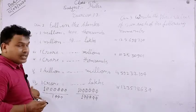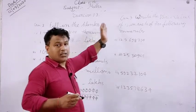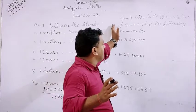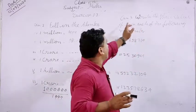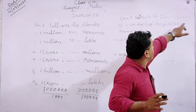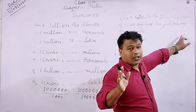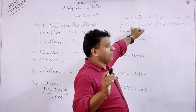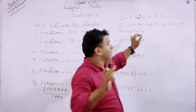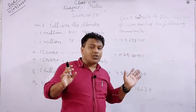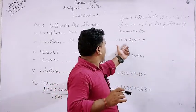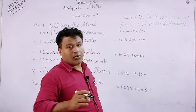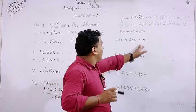Now I will tell you Question Number 3. Question Number 2 mein koi bhi problem ho toh aap hum se share karenge. Ab yahan pe Question Number 3 note kiya hai — 'Write the place value of 5 in each of the following.' Write means kya karna — likhna hai. Place value, yaani sthaniya maan — aap 5 ka in each of the following, har ek numeral mein 5 ka place value likhna hai. Numbers bahut lamba diya gaya hai — ones, tens, hundreds, thousands, ten thousands, lakh, ten lakh, crore, ten crore — in mein se only five select karna hai.